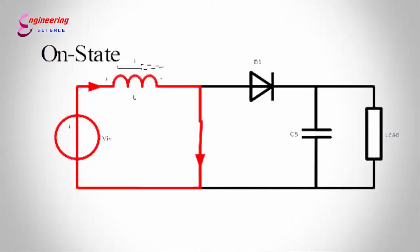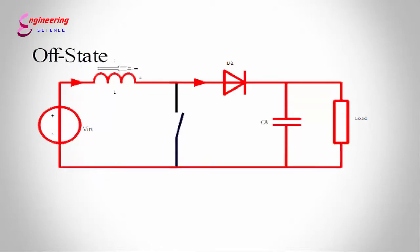When the switch is closed, current flows through the inductor in a clockwise direction and the inductor stores some energy by generating a magnetic field.